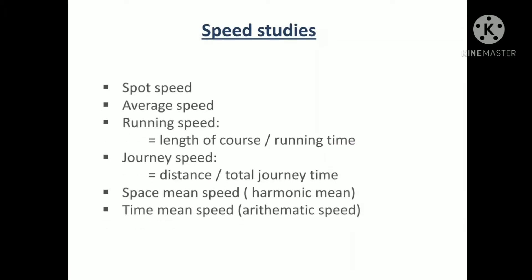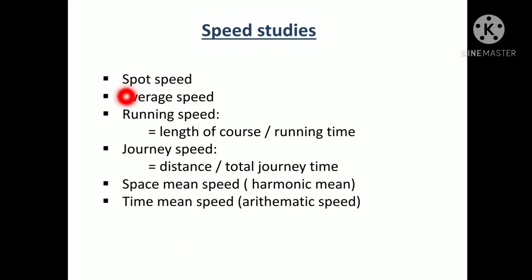Hello viewers, in this video let's learn about speed studies. Spot speed is the instantaneous speed of a vehicle at a specified location. Average speed is the average of the spot speeds of all vehicles passing a given point on the highway. Running speed is the average speed maintained by a vehicle over a given course while the vehicle is in motion.